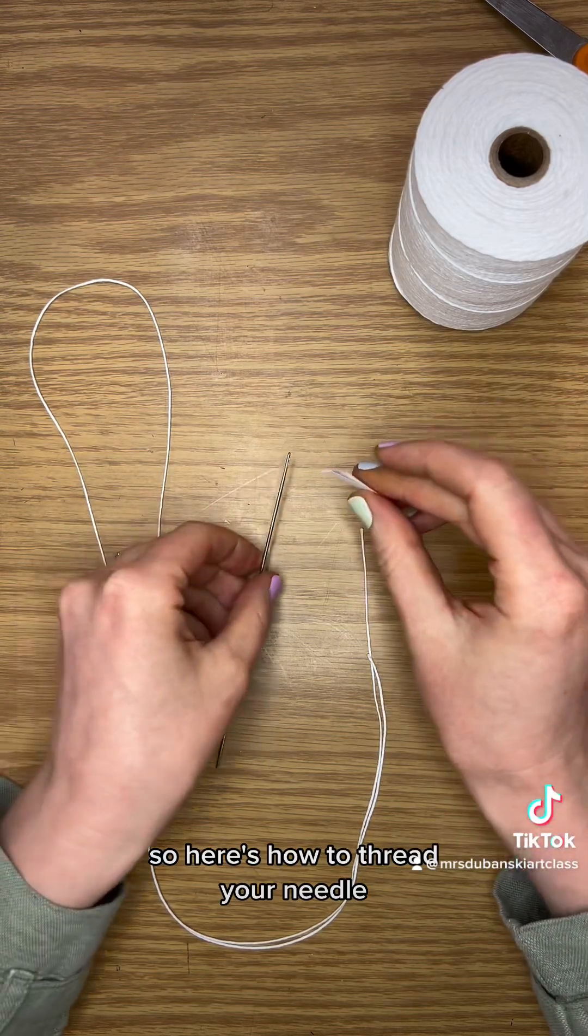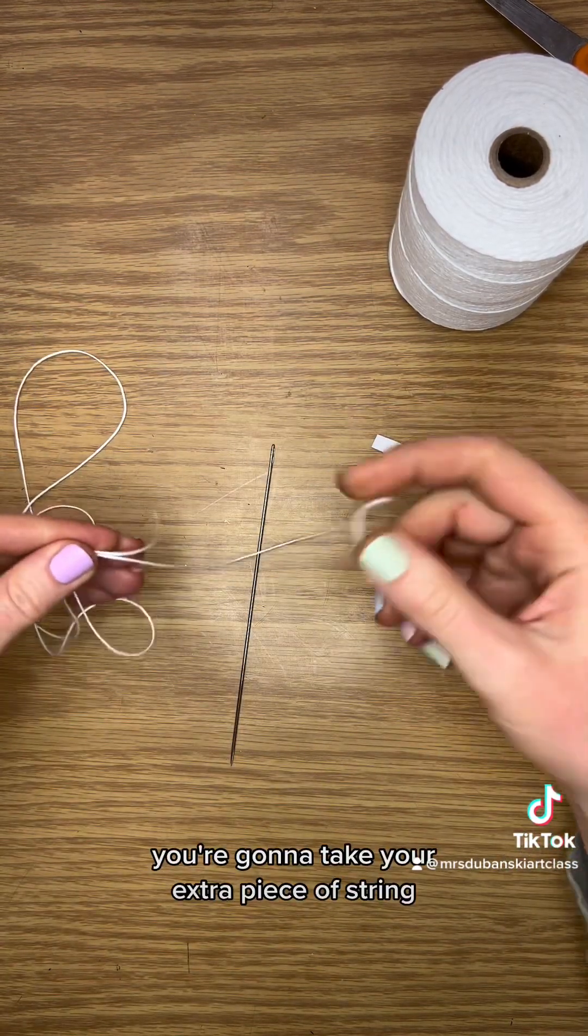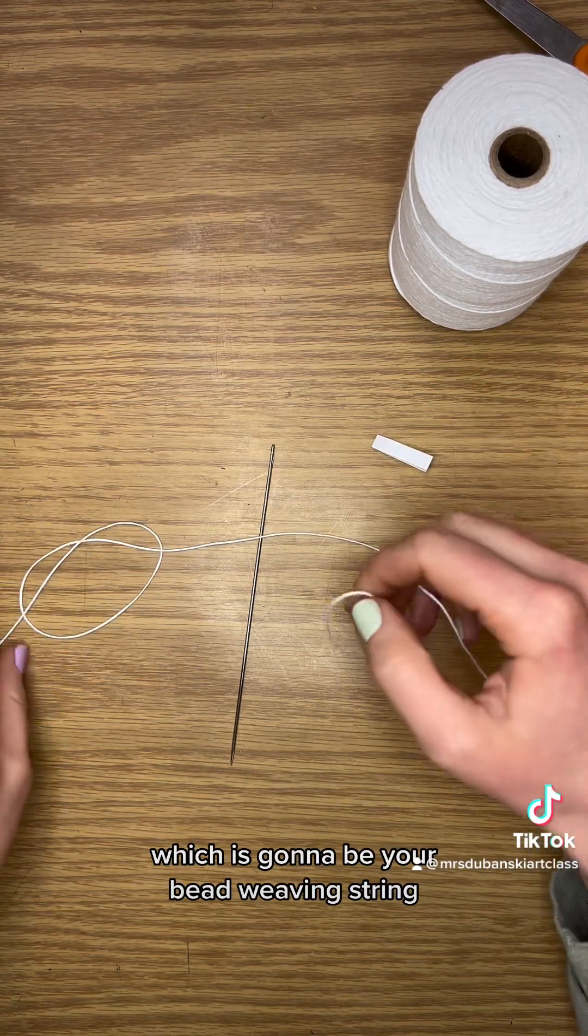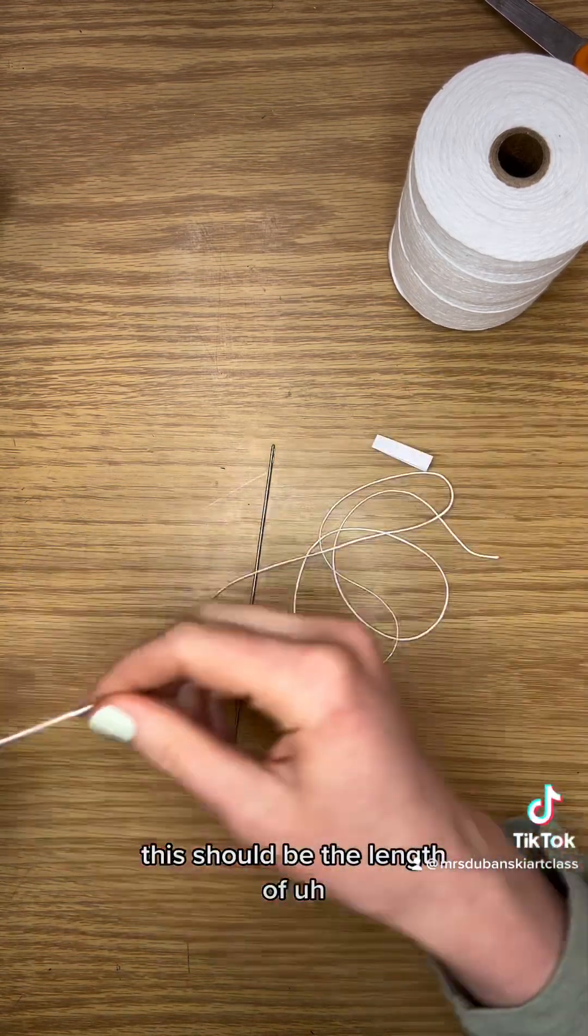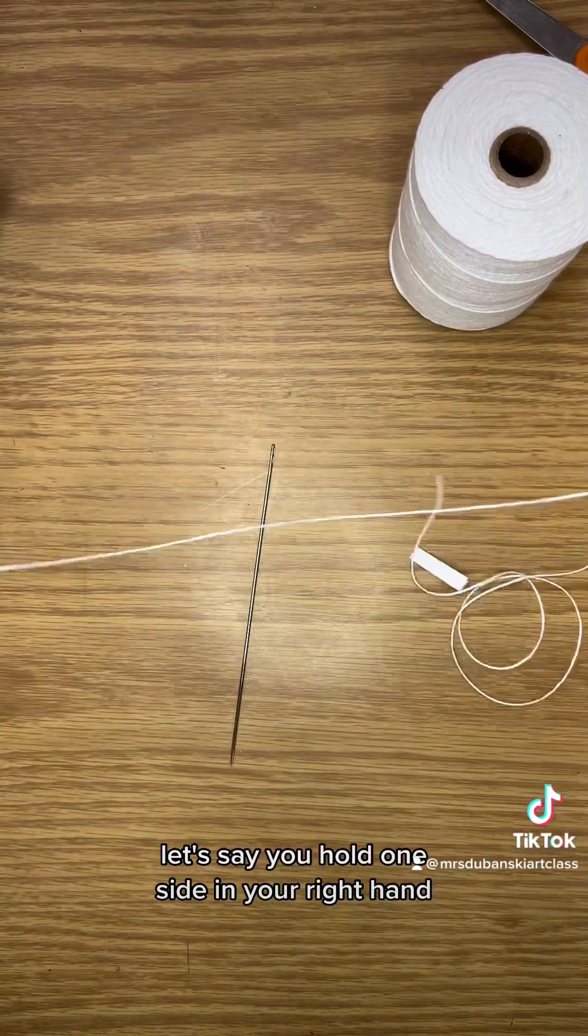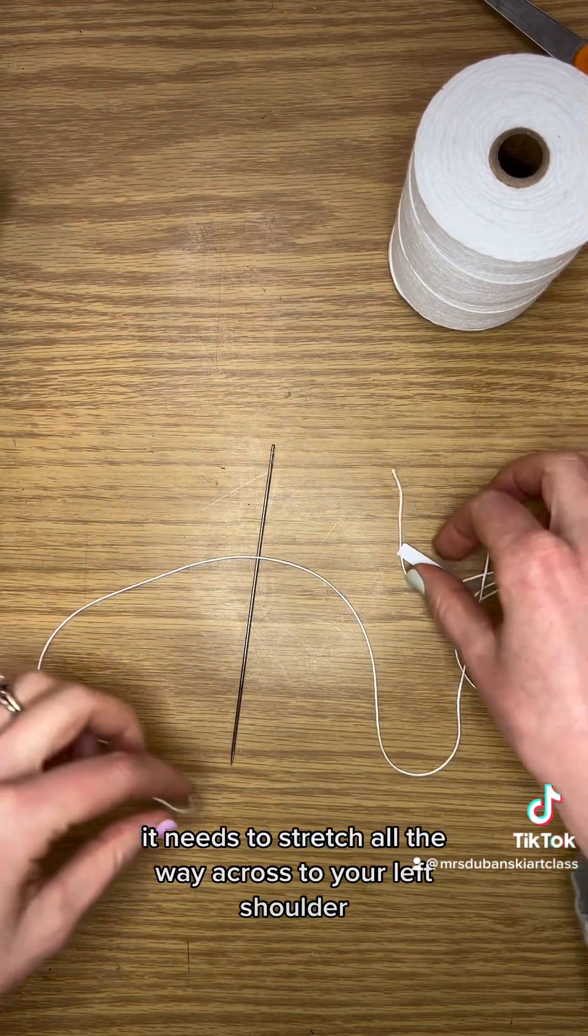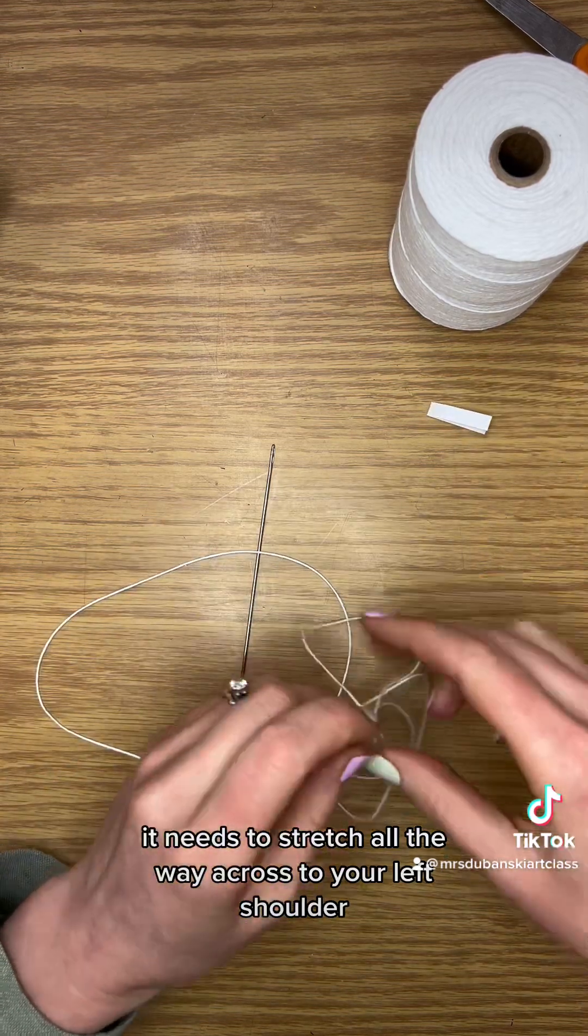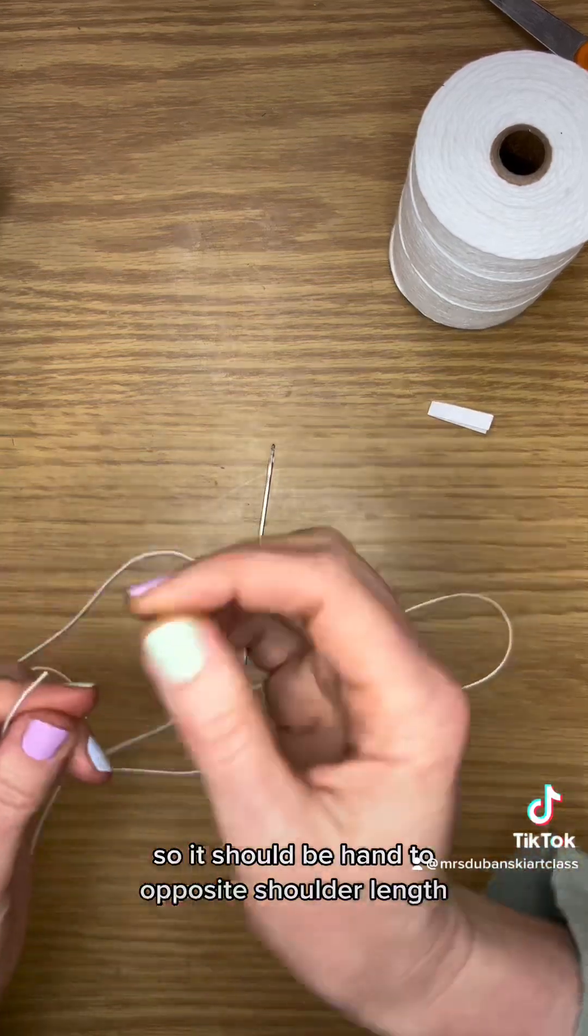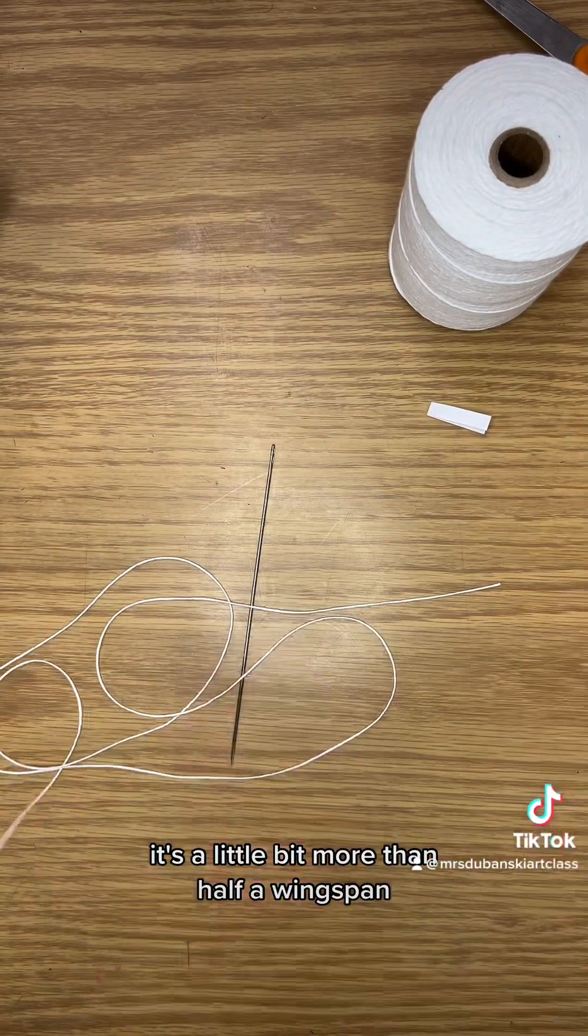So here's how to thread your needle. You're gonna take your extra piece of string which is going to be your bead weaving string. This should be the length of, let's say, you hold one side in your right hand, it needs to stretch all the way across to your left shoulder. So it should be hand to opposite shoulder length, a little bit more than half a wingspan.